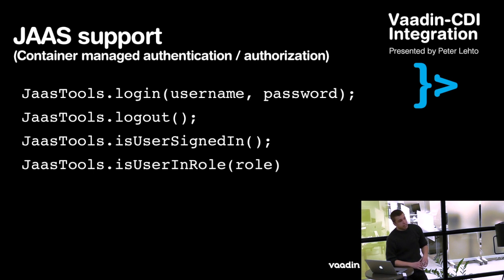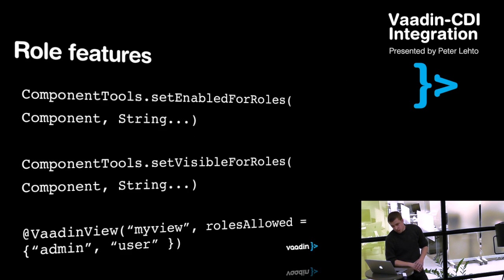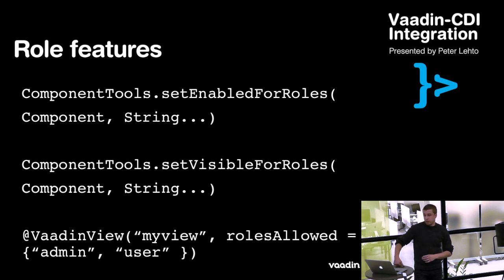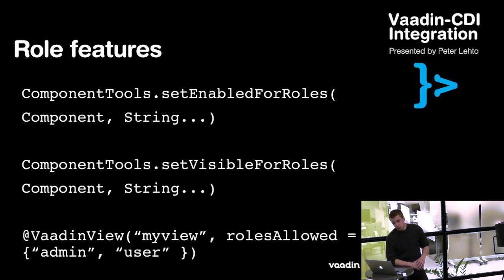What JAAS actually does is container-level authentication and authorization, so you don't have to provide your own role or user classes in your own application. Instead you can use LDAP or whatever is available from the container managed layer. There's also a ComponentTools class that allows you to enable or disable components based on the role information of the user. These all apply for the currently logged-in user, and you can also set components visible or not based on role information.